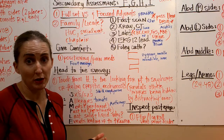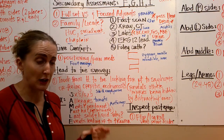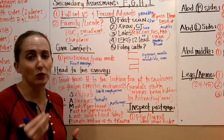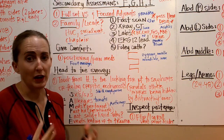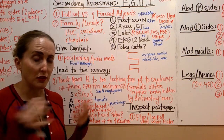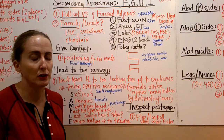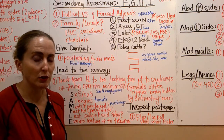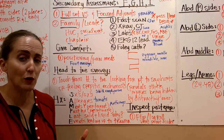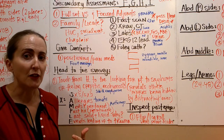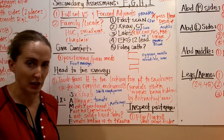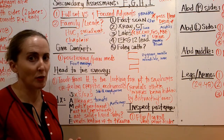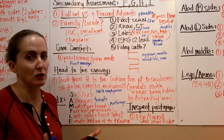We want to know the events leading up to the trauma. Was it just a trauma, or were they having a medical issue that caused the accident? A good example is a diabetic patient who has hypoglycemia while operating a vehicle, goes unconscious, and gets in a car accident. That patient is both a medical and a trauma patient — we need to treat the medical cause along with all the trauma.